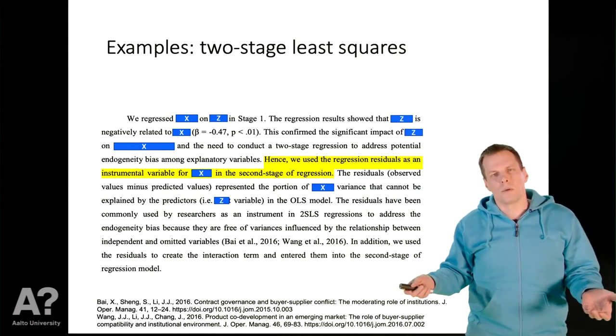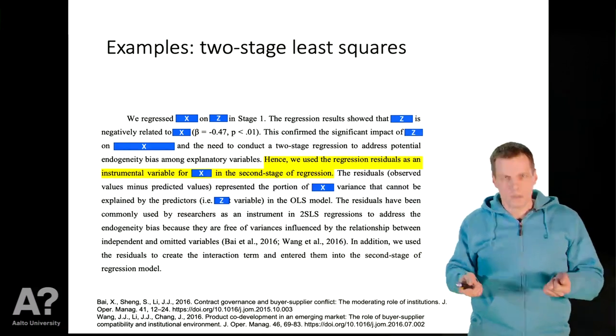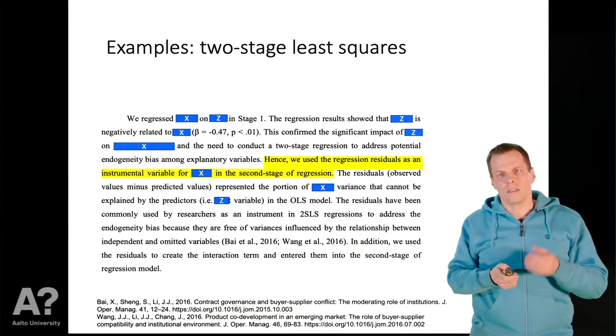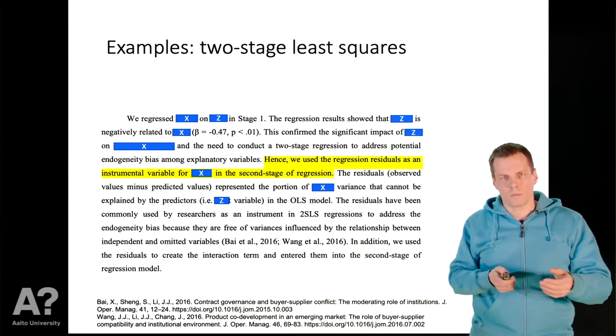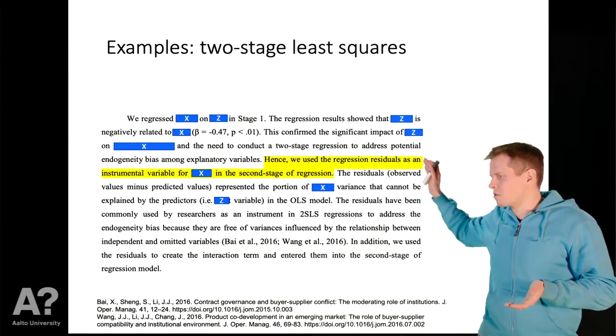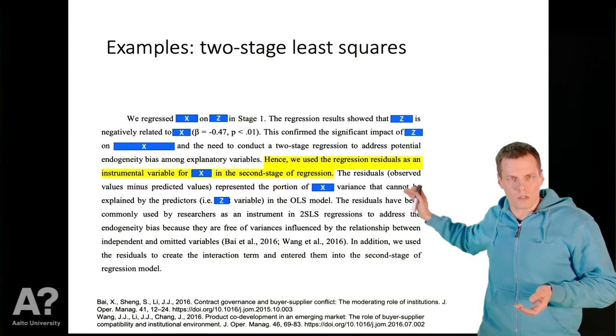So what's the problem? The problem is that this is not how two-stage least squares works. So you don't take the residual from the first stage regression analysis, instead you take the fitted value. Where do these researchers come up with the idea that this is how two-stage least squares is supposed to be done?